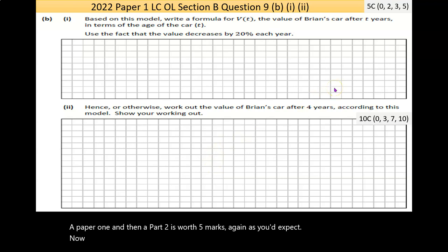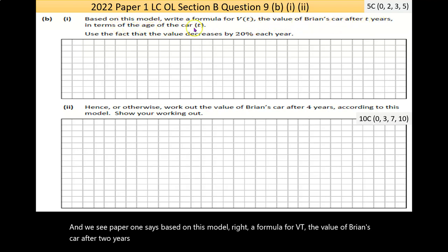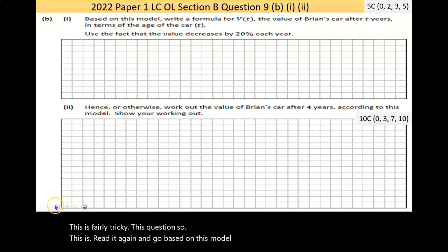Now, in part B, part 1 says, based on this model, write a formula for V(T), the value of Brian's car after T years, in terms of the age of the car. Use the fact that the value decreases by 20% every year. This is fairly tricky, this question. Based on this model, write a formula for V(T).